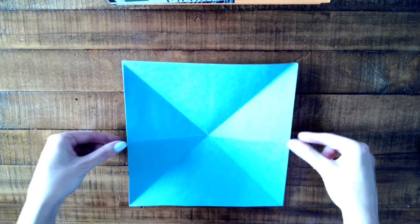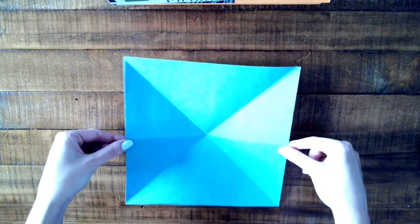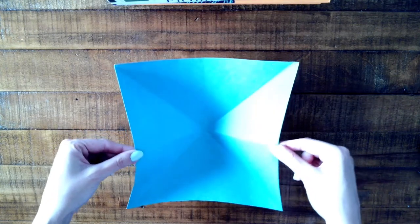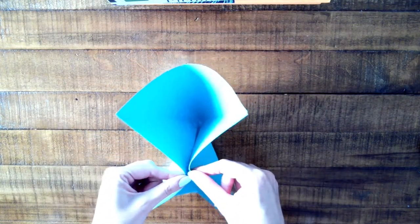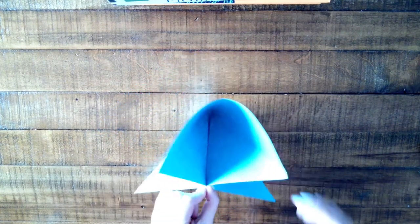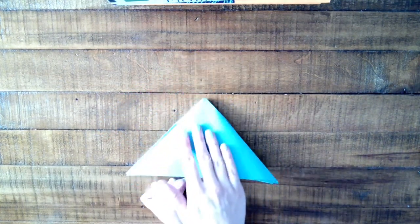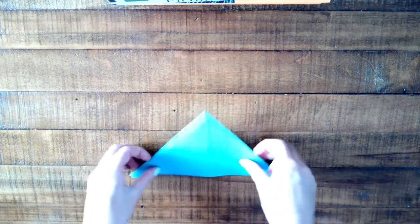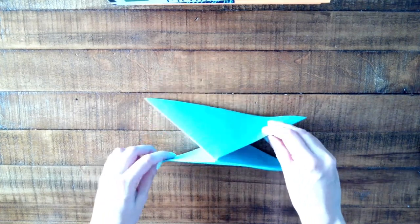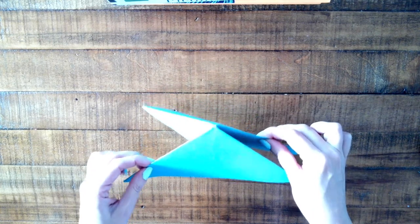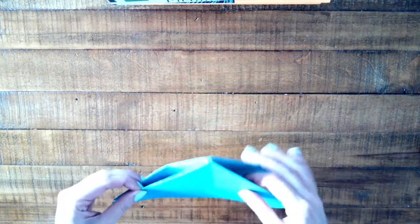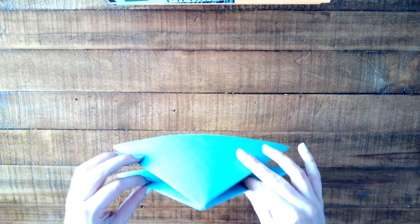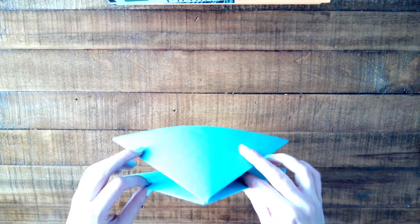This next fold is a tricky one. Grab both the left and right edge of your paper on your horizontally creased line and bring them together towards the middle. Push down on the top where your triangle is and smooth it out. You should now have a triangle on either side where the edges meet in the middle.